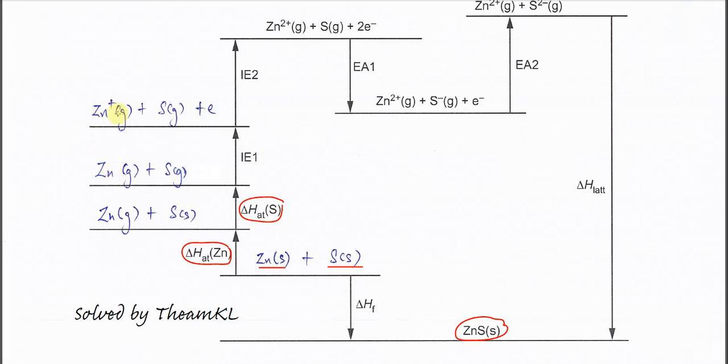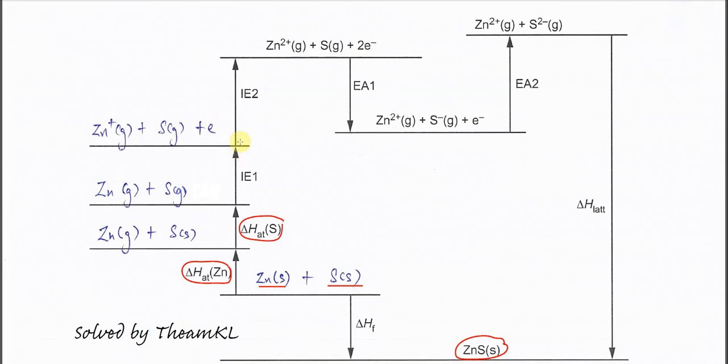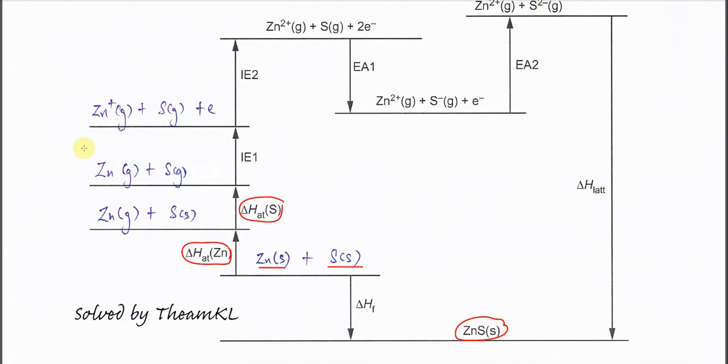After that is IE1 for zinc, so it will form zinc+ gaseous ion and release one electron, and the sulfur is still a gaseous atom. Then continue here, IE2: zinc+ now releases another electron to form zinc²+. These two electrons will be gained by sulfur to form sulfide. After that, gains another electron to form S²⁻. This is how you fill up the Born-Haber cycle.